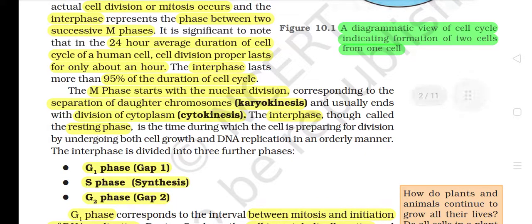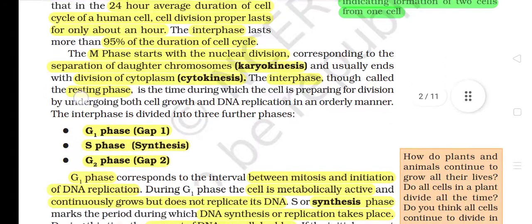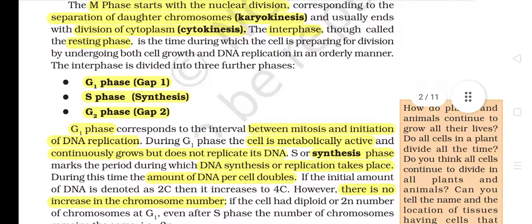The M phase starts with nuclear division corresponding to the separation of daughter chromosomes — karyokinesis — and usually ends with division of cytoplasm — cytokinesis. The interphase, though called the resting phase, is the time during which the cell is preparing for division by undergoing both cell growth and DNA replication in an orderly manner. The interphase is divided into three phases: G1 phase (Gap 1), S phase (Synthesis phase), and G2 phase (Gap 2).